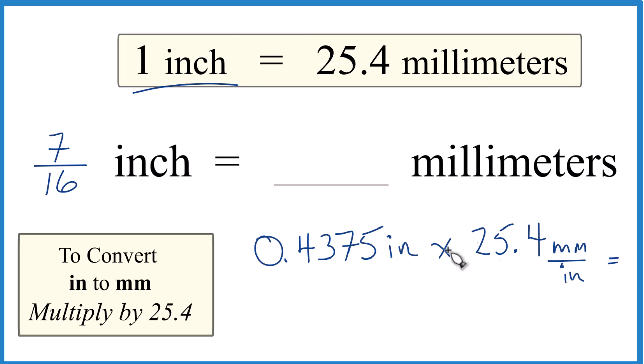Because now when I multiply, I have inches on the top and the bottom. They cancel out. I'm left with millimeters. I know I did it right. So I do the multiplication. I get 11.1125 millimeters. Let's round that to 11.11 millimeters.